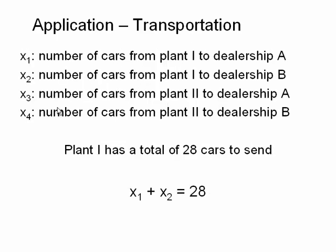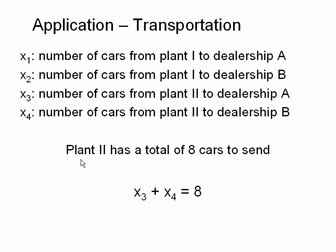I'll arrange that on top to keep track of the variables and now start picking out information and seeing how it corresponds to an equation. Plant 1 has 28 cars to send. Plant 1 corresponds to x1 and x2, so x1 plus x2 must equal 28. Plant 2 had 8 cars to send, and x3 and x4 have to do with plant 2, so x3 plus x4 equals 8. Once you know what the variables are, you can read off what the equation should be.